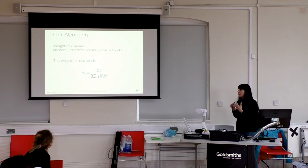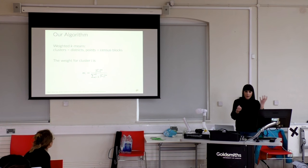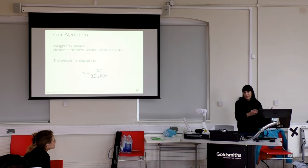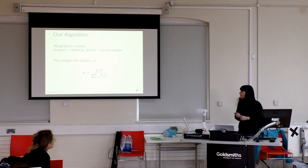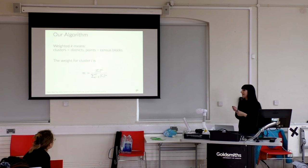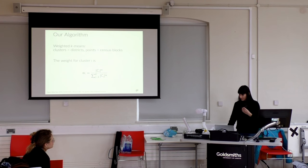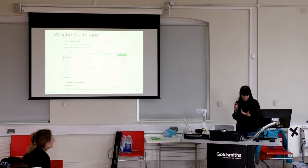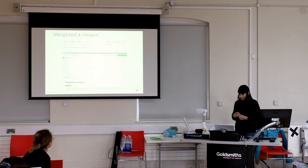We used a simple algorithm called k-means and modified it to have weights on the clusters. We need weights because you can't have a thousand people in one district and a million in another — they need to be roughly equal in population so each vote counts for roughly the same thing. We found a way of assigning weights to clusters based on how many items are currently in a cluster, so people get assigned to the nearest cluster that isn't already full, and clusters end up with similar populations. All this code is completely open source on GitHub.